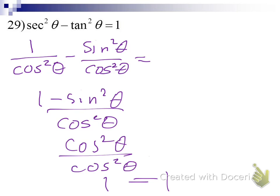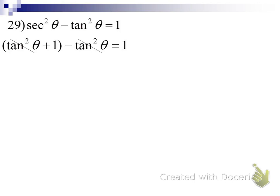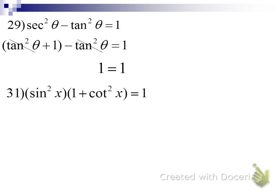If something is true, there's always going to be more than one way to show that it's true. Have a look at this one: sine squared of x times (one plus cotangent squared of x). Look at your Pythagorean identities — do you see anything that jumps out? One plus cotangent squared — is that equal to anything? It's equal to cosecant squared. So substitute cosecant squared of x in the place of (one plus cotangent squared).